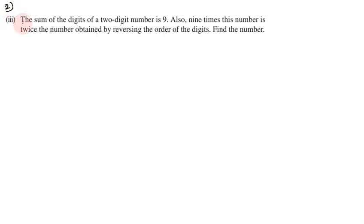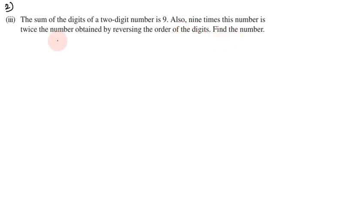Question number 2, subdivision 3. The sum of digits of your 2-digit number is 9. Also, 9 times this number is twice the number obtained by reversing the order of the digits. Find the number.